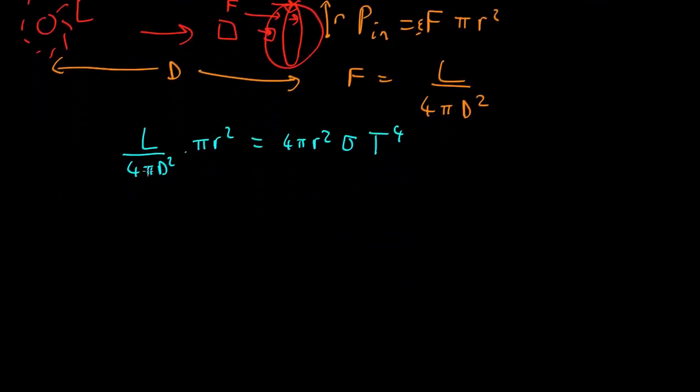So we can cancel some pi's, cancel the r squared. And rearranging, we find that temperature is going to be the fourth root of L over 16 pi sigma d squared. So that will tell us the equilibrium temperature we expect for a planet.